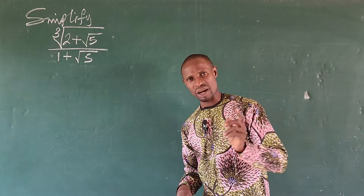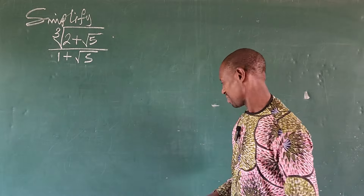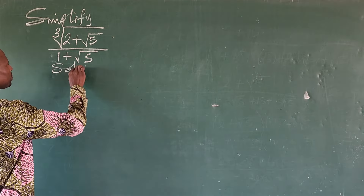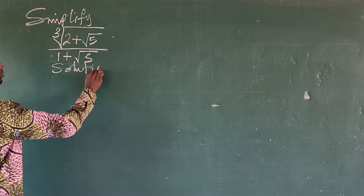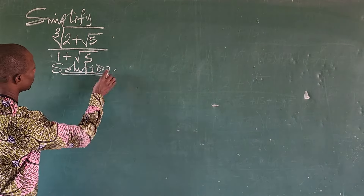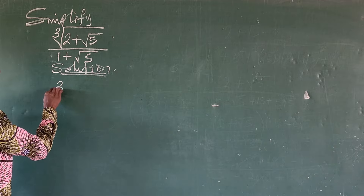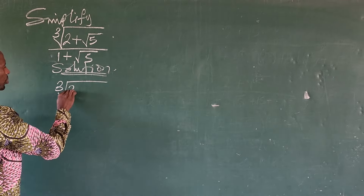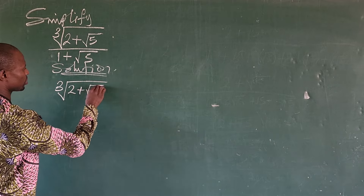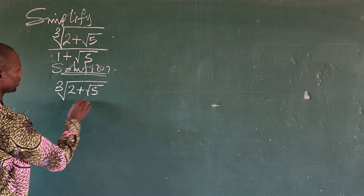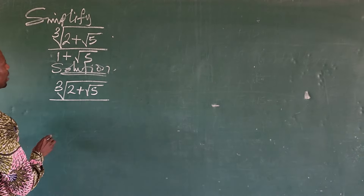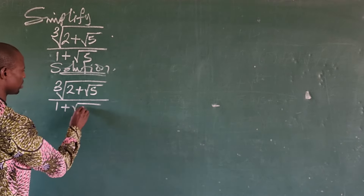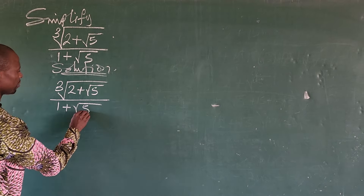So let's go into today's challenge without much waste of time. The question is: the cube root of 2 plus the square root of 5, all over 1 plus the square root of 5.